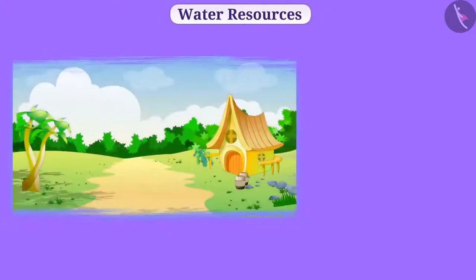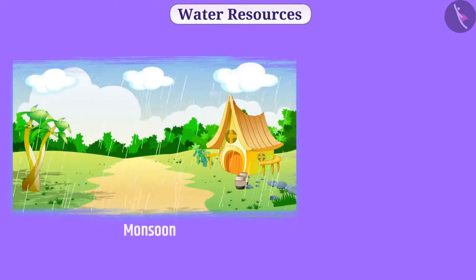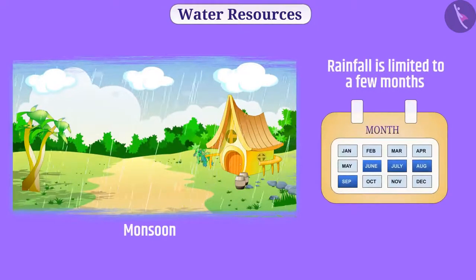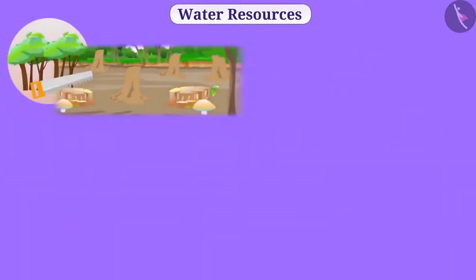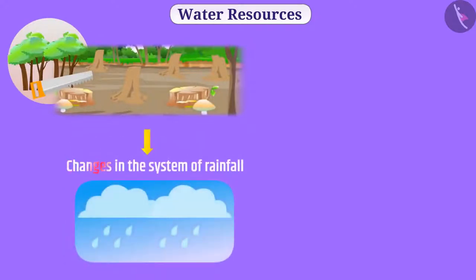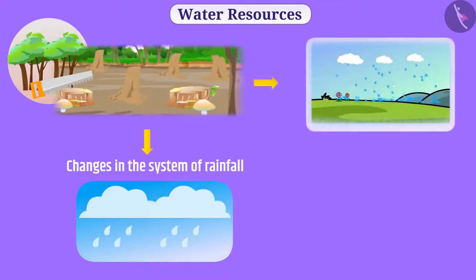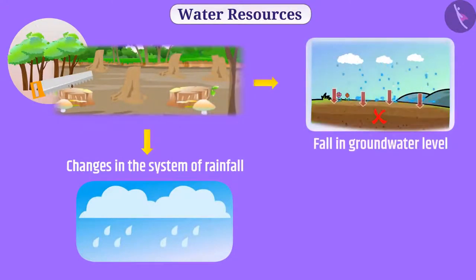In our country, rainfall mainly depends on the monsoon, so the duration of rainfall is limited to a few months. Due to deforestation, there are changes in the system of rainfall. Because of the absence of trees, rainwater cannot go into the ground — it drains and merges into the sea.